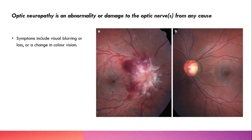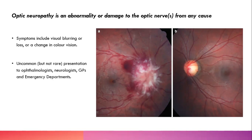What are the symptoms these patients present with? Visual blurring or visual loss. In the early stages, though, a lot of optic neuropathies just present with a change in colour vision, so it can be quite subtle, or the symptoms can be very vague. But in general terms: blurred vision, loss of vision, or a change in colour vision. It's uncommon but not rare, and early diagnosis does affect visual outcomes, morbidity, and even mortality in some cases.